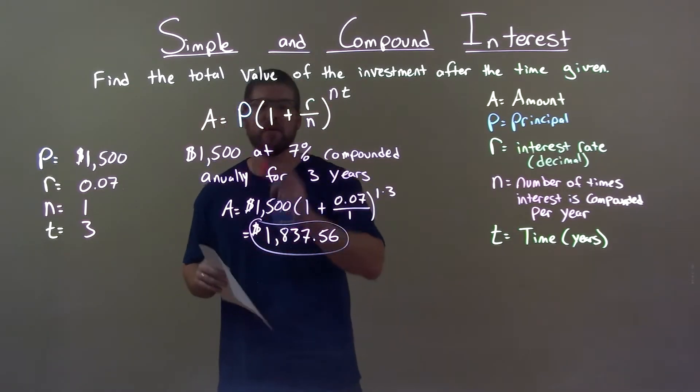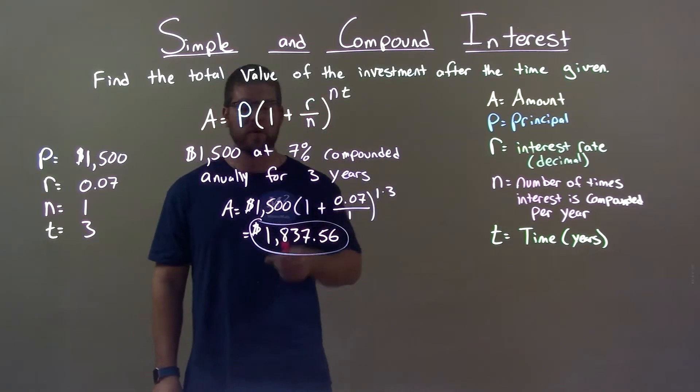Quick recap, we're given $1,500 at 7%, compounded annually for three years.